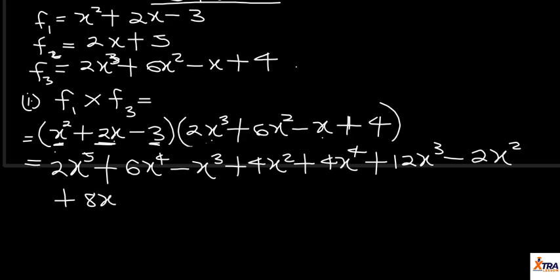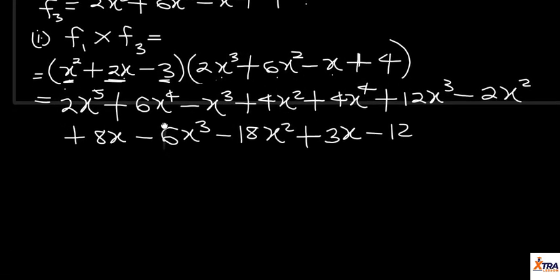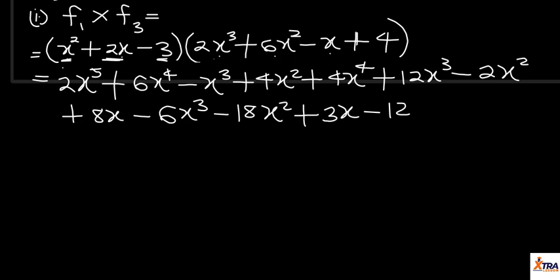Then we go to the last term. Minus 3 times 2x cubed gives us minus 6x cubed. Minus 3 times 6x squared gives us minus 18x squared. Minus 3 times minus x gives us plus 3x. Then minus 3 times plus 4 gives us minus 12. Since we have all of this, I can now collect my like terms and simplify.